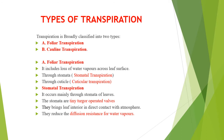Having seen the magnitude of water loss, let us understand the types of transpiration. Transpiration is broadly classified into two types: foliar transpiration and cauline transpiration. Foliar transpiration includes loss of water vapors across the leaf surface. The pores present in the leaf are stomata — transpiration through stomata is called stomatal transpiration, and if it occurs through the cuticle, it is called cuticular transpiration.